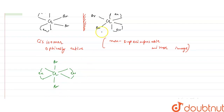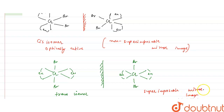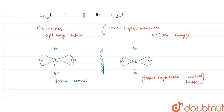If we draw the mirror image of the trans isomer, the bromine ligands and ethylenediamine ligands appear in the same positions. This mirror image is completely superimposable on the original. Since it is a superimposable mirror image, it cannot be an optical isomer — so the trans isomer is optically inactive, and the two mirror images are the same compound.